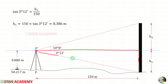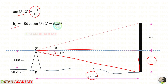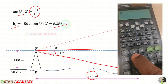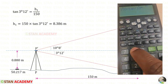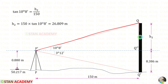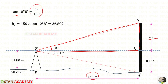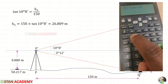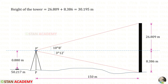Taking the lower triangle and applying the tan formula: tan 3 degrees 12 minutes equals H1 upon 150, giving H1 equals 8.386 meters. For the upper triangle: tan 10 degrees 8 minutes equals H2 upon 150, giving H2 equals 26.809 meters. To find the total height of the tower, we add H1 and H2, which gives 35.195 meters.